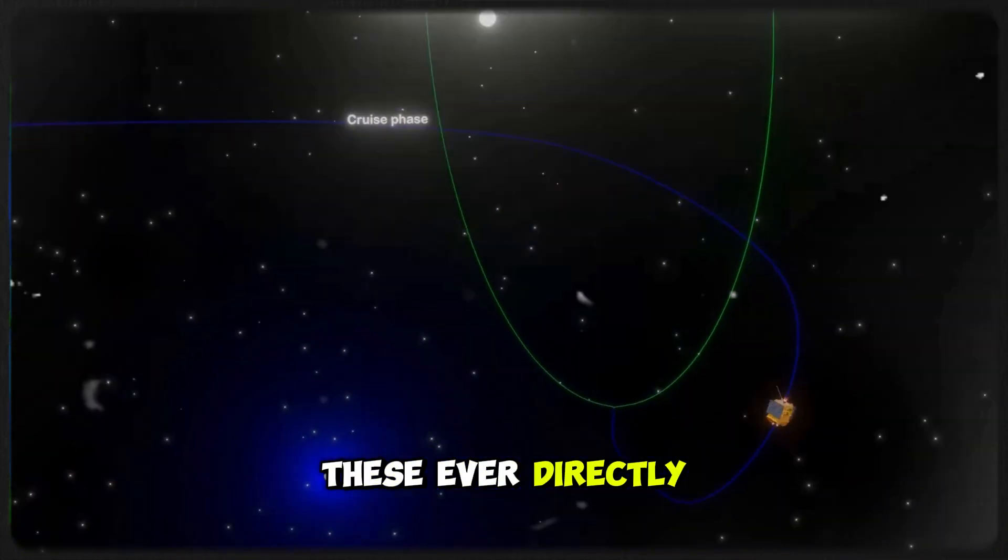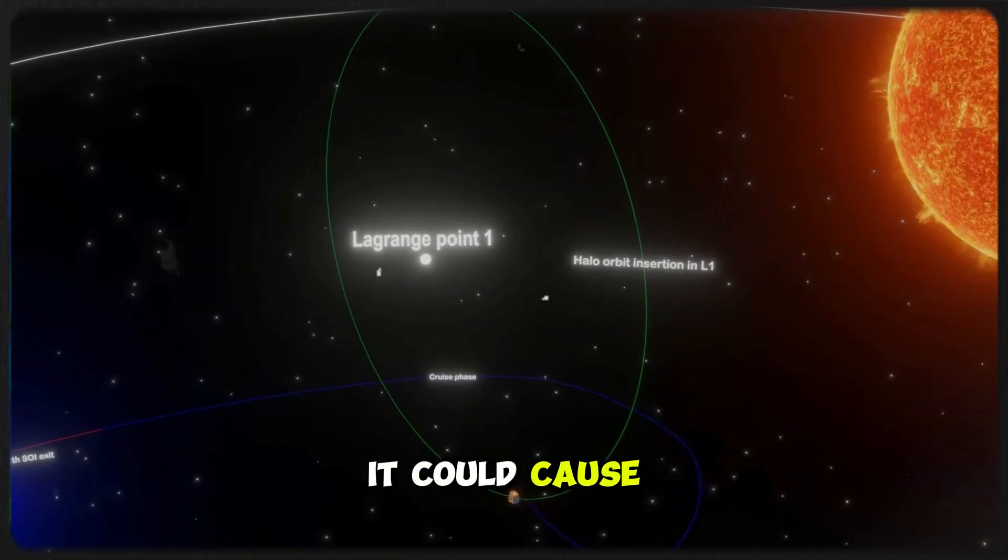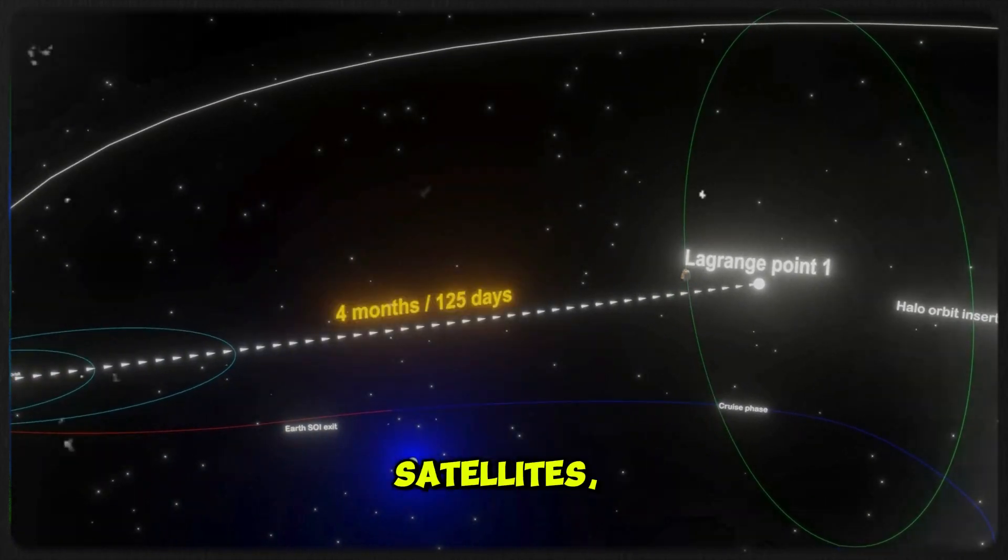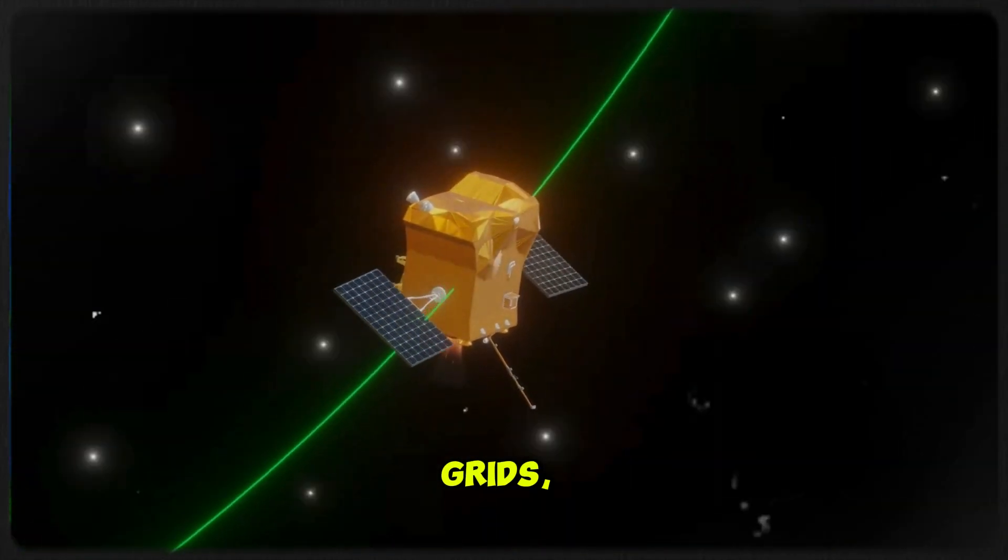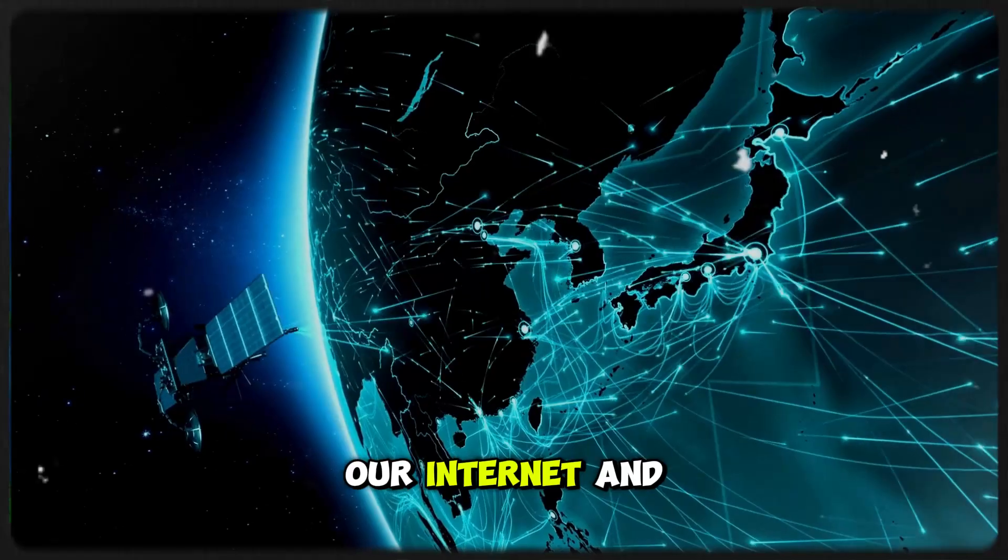If one of these ever directly hits Earth, it could cause chaos, disrupting satellites, knocking out power grids, and even impacting our internet and communications.